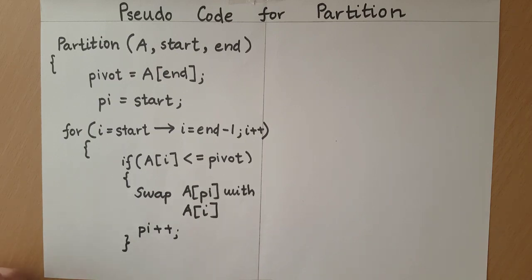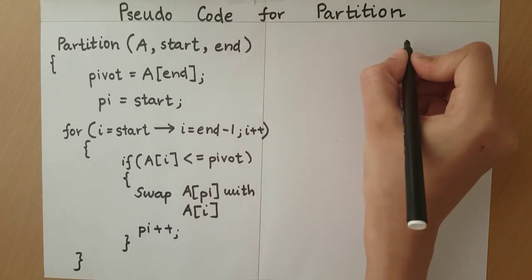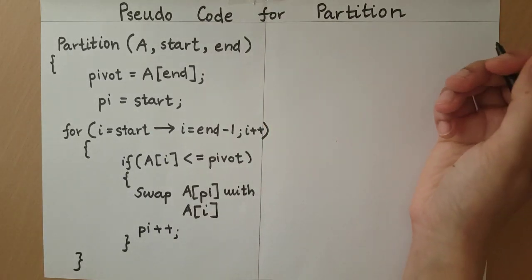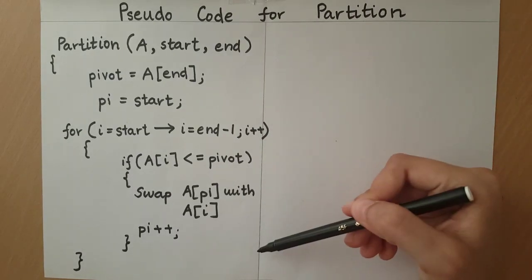This has to happen for every element of the array, so this will go through the loop. Once i reaches end, it will come out of the loop. Once a line of code over here is executing, i will be equal to end. Once we have checked every element of the array up till the pivot, we must swap the element at array of pi with the pivot.